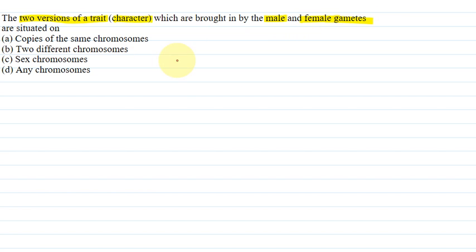Now I have asked that the two versions of a trait, which we call alleles, are situated where? So we have four options.